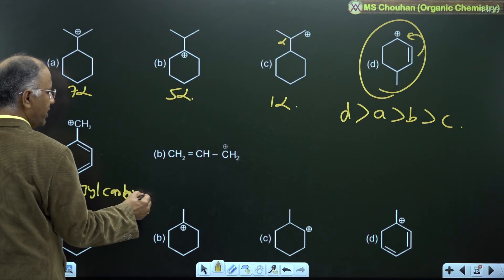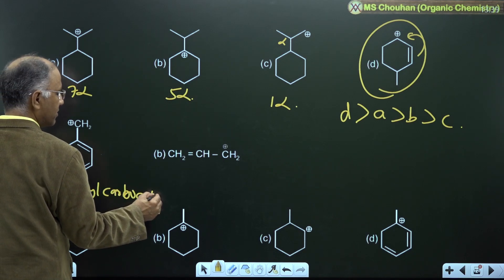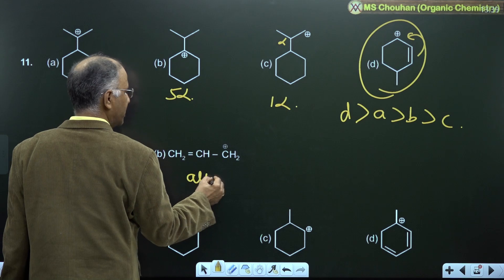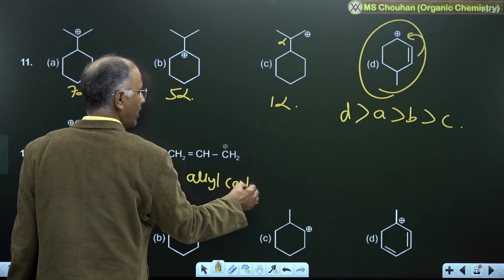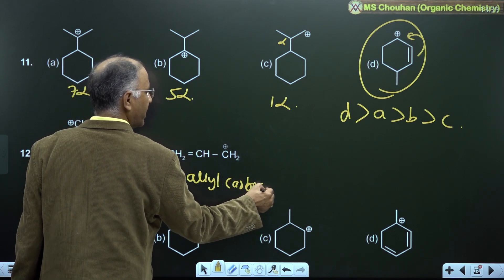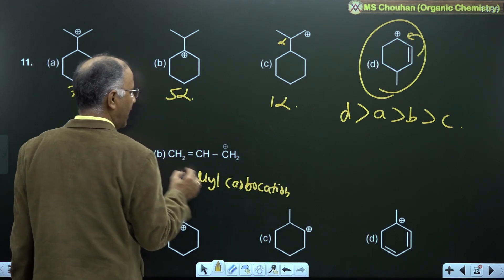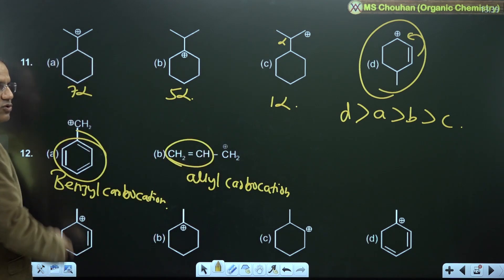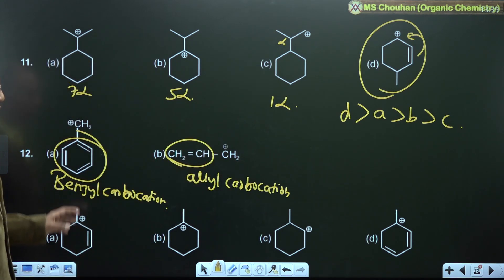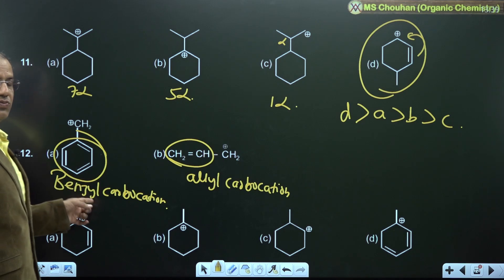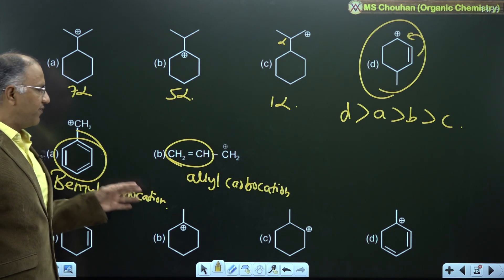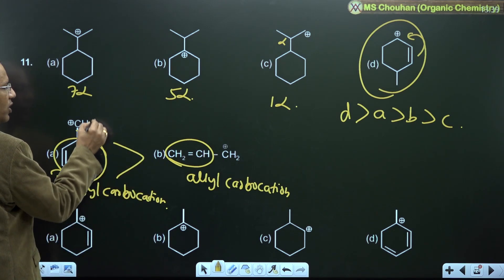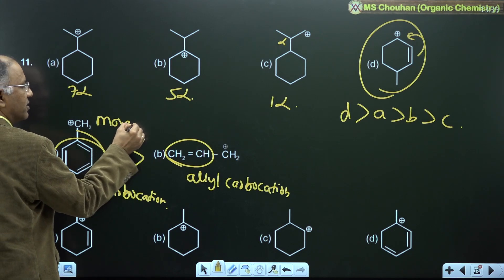For example 12: both are resonance stabilized. Carbon next to benzene is a benzyl carbocation; carbon next to alkene is an allylic carbocation — these two common names you must remember. Both are resonance stabilized, but the first is more stable than the second because of a greater number of resonance structures.